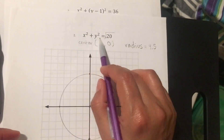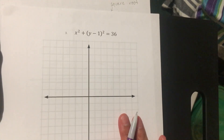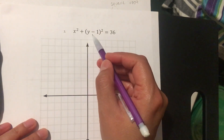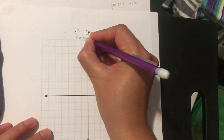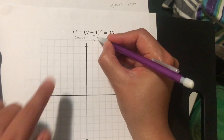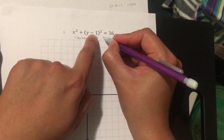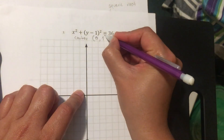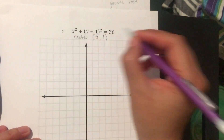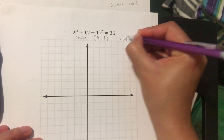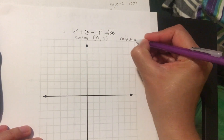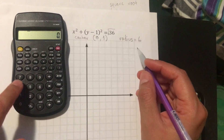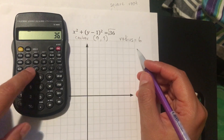Now exercise number three. You're not adding or subtracting on x, but you are subtracting on y. So for the center, x is 0, and since we're subtracting negative 1, the opposite gives us positive 1. The center is (0, 1). For the radius, take the square root of 36, which is 6 because 6 times 6 is 36.